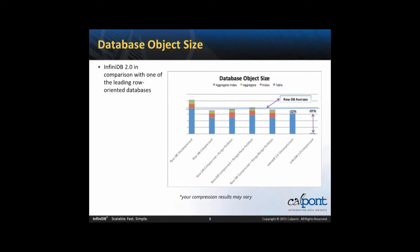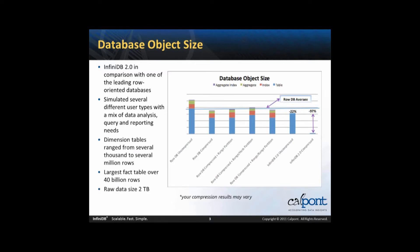InfiniDB 2.0 is going to be compared during these slides with one of the leading row-oriented databases. We're going to look at several different user types with a mix of data analysis, query, and reporting needs. The dimension tables in this particular star schema ranged from several thousand to several million rows, and the largest fact table had over 40 billion rows — that's billion with a B. The raw data size was about two terabytes.